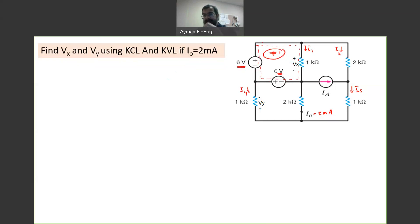So here, if you apply KVL, if you go clockwise, we have VX minus 6, minus 6 equal to 0, or VX is equal to 12. Done, VX is done.